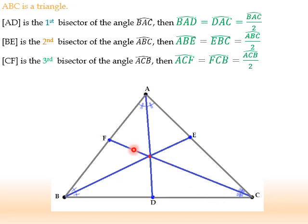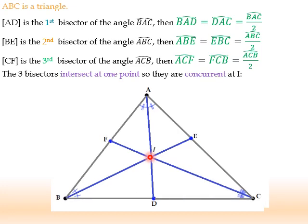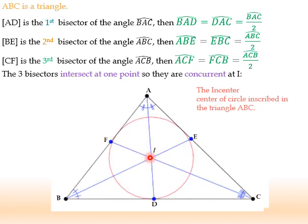As we noticed, these three bisectors are concurrent. They intersect at one point. This point, which I name here I, is the center of circle in triangle ABC. Center of circle inscribed. Inscribed means the circle is drawn inside the triangle. So, if you put your compass on I and open it as a radius of IF, you will get this circle, which is inscribed or inside the triangle ABC. So, I is called in-center or center of circle.